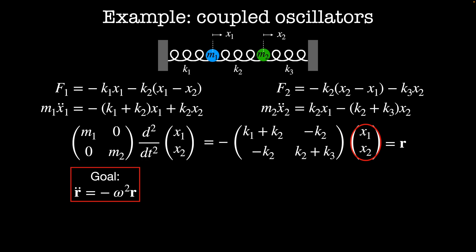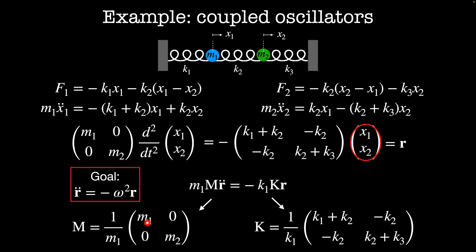So how do I do this? Let me first pull out a factor of m1 from the left hand side and a factor of k1 from the right hand side. That means that all of the terms of the matrices are now going to be dimensionless. Then my equation looks like m1 times some matrix m times r double dot is equal to minus k1 times some matrix k times r. Here m is going to be 1 over m1 times m1 0 0 m2 and the matrix k is going to be given by 1 over k1 times k1 plus k2 minus k2 minus k2 k2 plus k3. I'm going to call the ratio of k1 over m1 omega 1 squared. And so the equation we're going to solve looks like this: m times r double dot is equal to minus omega 1 squared times k times r.